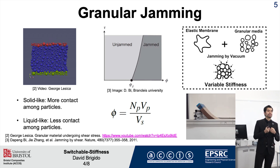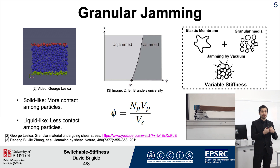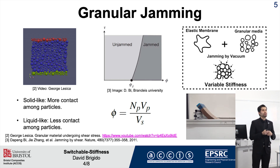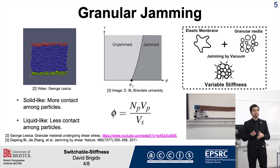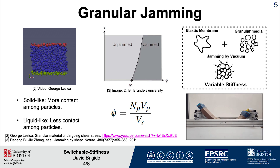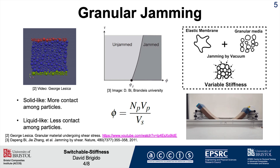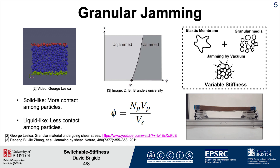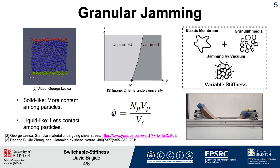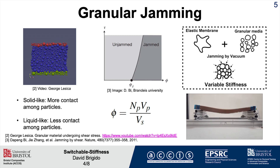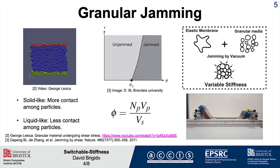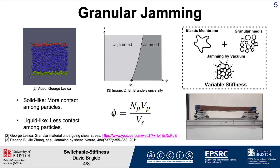Vice versa, when there is less shear stress, the material behaves like a fluid. We are controlling this variation of stiffness by using vacuum. As you can see in the bottom right picture, it's a beam filled with granular media inside an elastic membrane connected to a vacuum hose. When vacuum is applied, it compresses the media in all directions, so it's quite stiff and strong. When we remove the vacuum, the beam collapses because it behaves like a liquid.